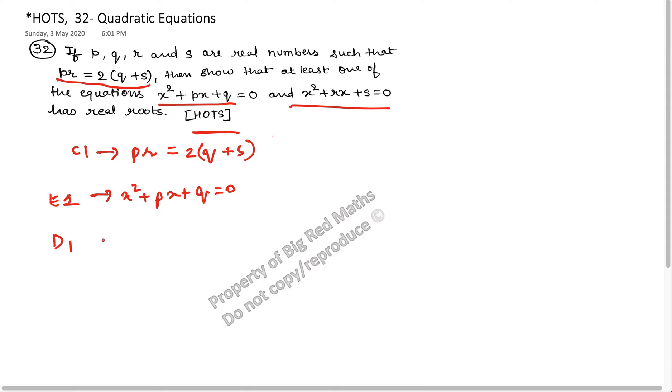Now for the equation one, what is the value of the determinant? D1 is equal to B² - 4AC. B² is p² minus 4 into 1 into C. So this is D1.